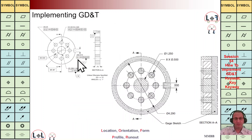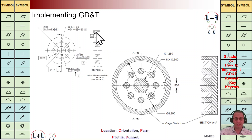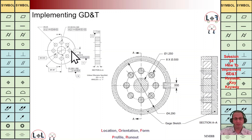Here we are going to have another example. Again I am going to emphasize the positioning control for the key slot. We are going to have reference plane A here — we are going to qualify it with flatness — and then we are going to have reference axis B, and then reference plane C.